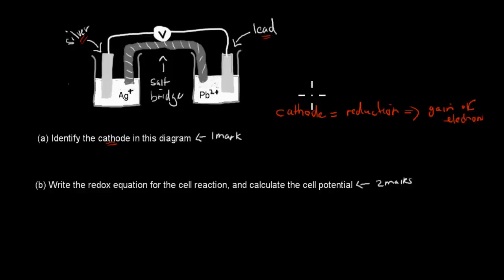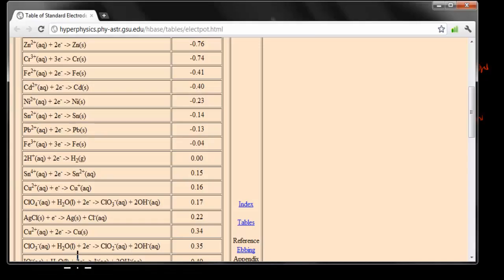We don't know that yet, we have to figure that out. And the way we figure that out is for figuring out which one is the more active metal. So, the more active metal is where oxidation occurs. And we want to find out which one is the less active. The less active is the cathode. And how we do that is, we look at that table.